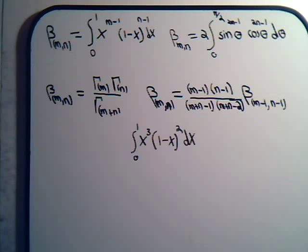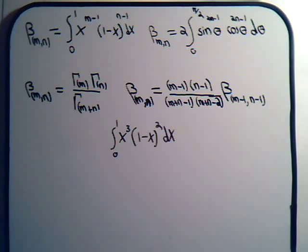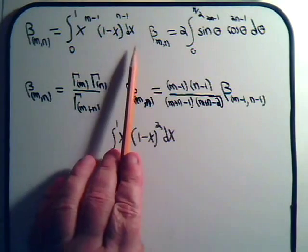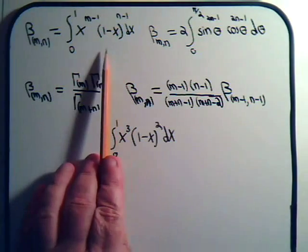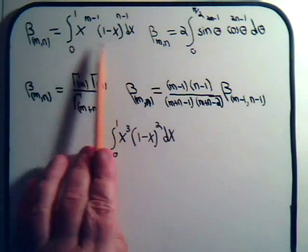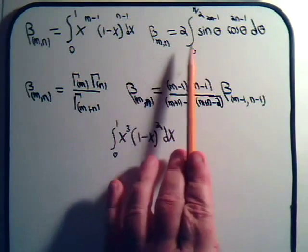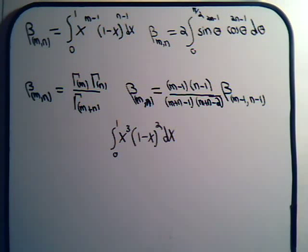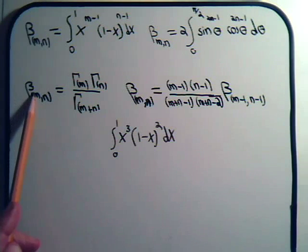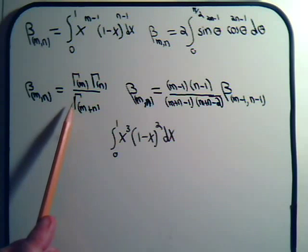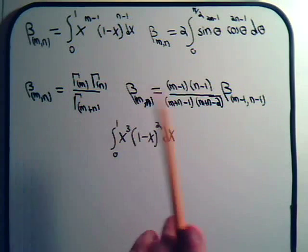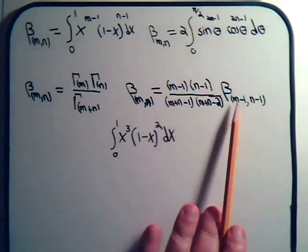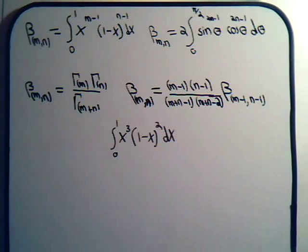We spent the last several videos dealing with the beta integral function. In our introduction video we laid out the definition, then derived a trig counterpart for the beta function. We then spent three videos deriving a relation between the beta function and the gamma function, and in the last video we derived a reduction formula for the beta function.